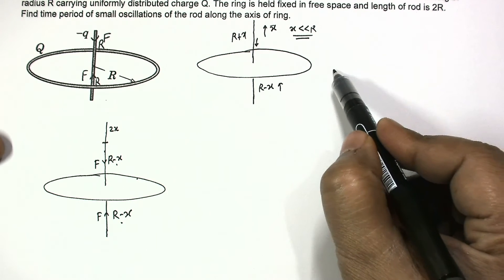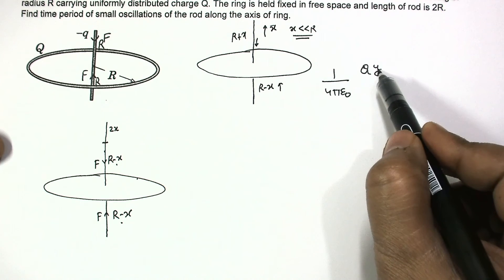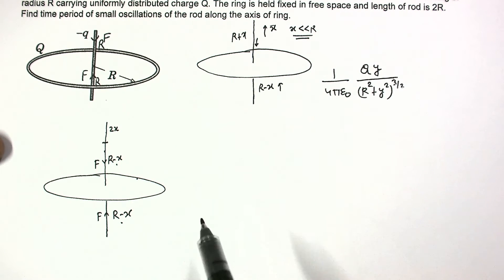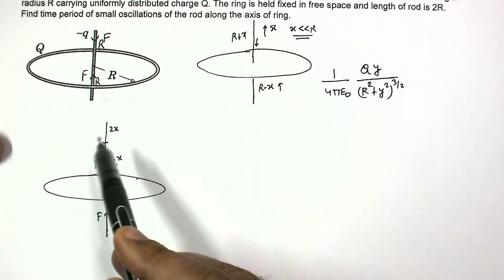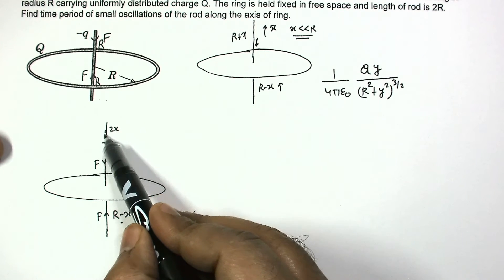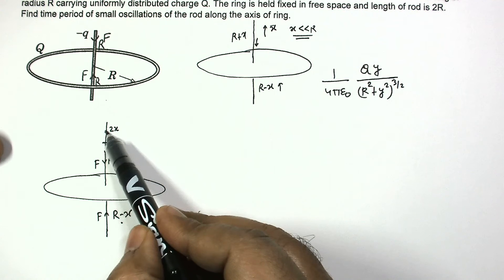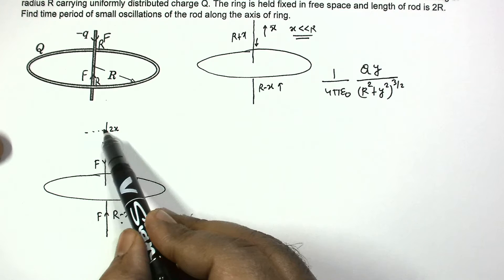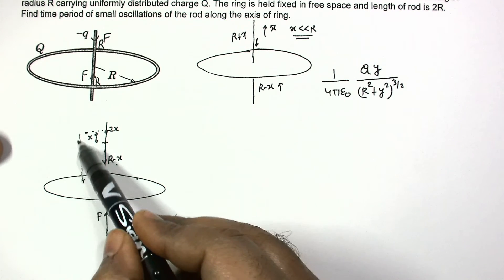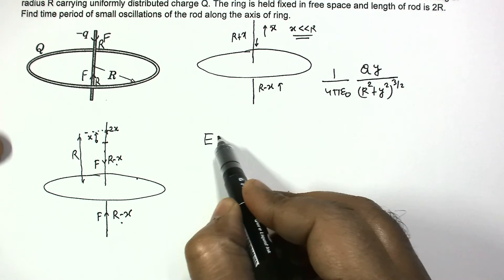The electric field on the axis of the ring is given by: E = (1 / 4πε₀) × (Q × y) / (r² + y²)^(3/2), where y is the axial distance from the center. Since 2x is very small, we assume the electric field is uniform over this length and equal to the field at distance y equal to r from the center. So the electric field is evaluated at y = r, giving E = (1 / 4πε₀) × (Q × r) / (r² + r²)^(3/2).